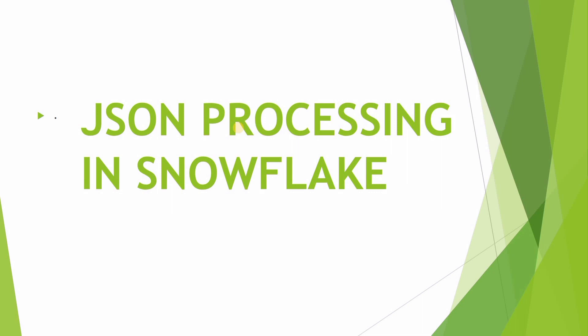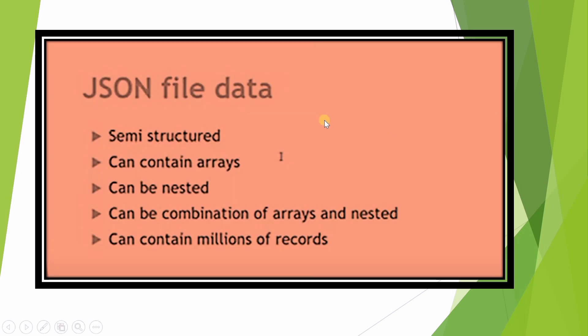JSON is a totally different type of data — it has key-value pairs, unlike CSV, PSV, and TSV files. We will load data from internal or external stages to Snowflake tables and see how to parse JSON data, including variant columns. JSON stands for JavaScript Object Notation. JSON data has all records in double quotes with key-value pairs, and it also contains arrays and nested data.